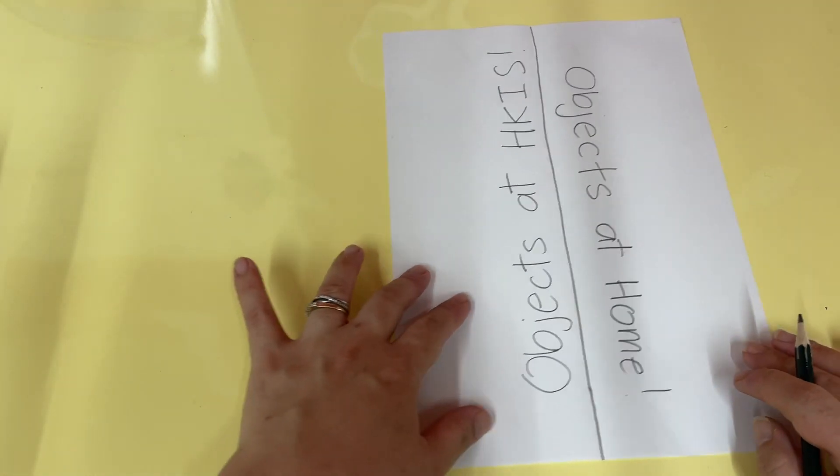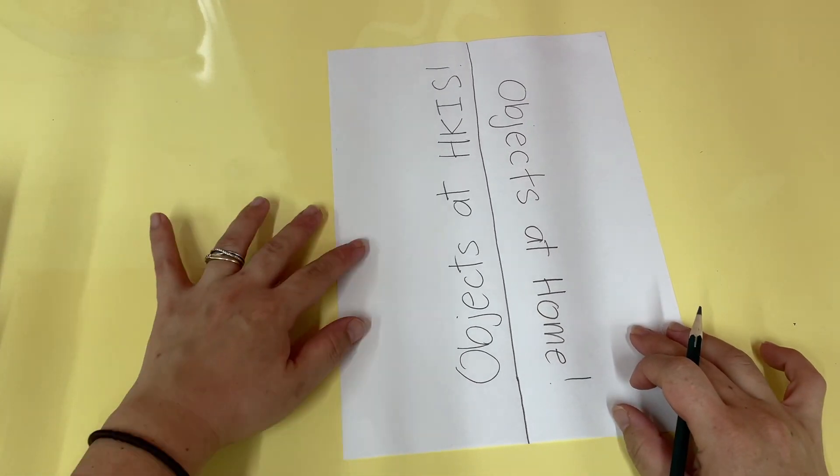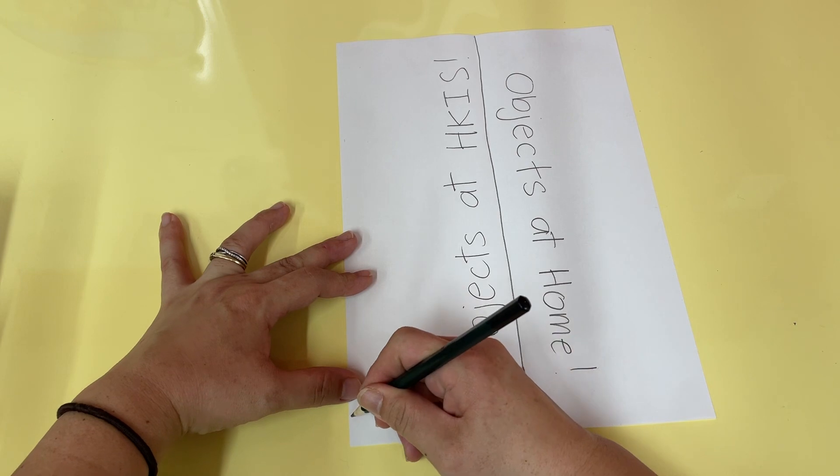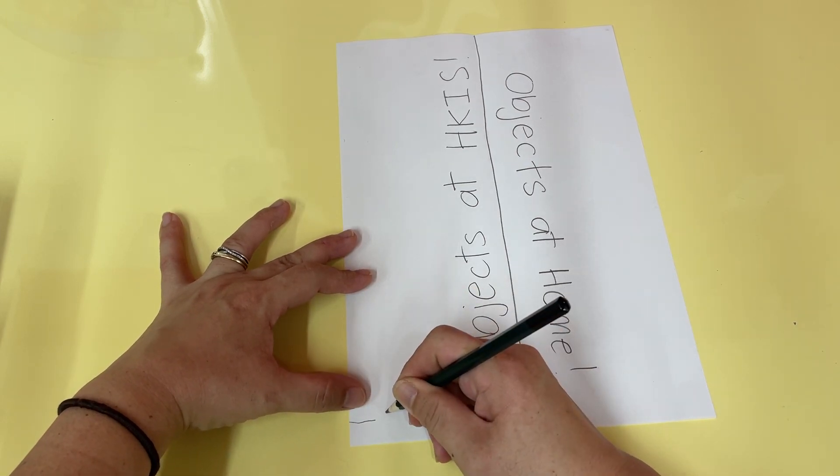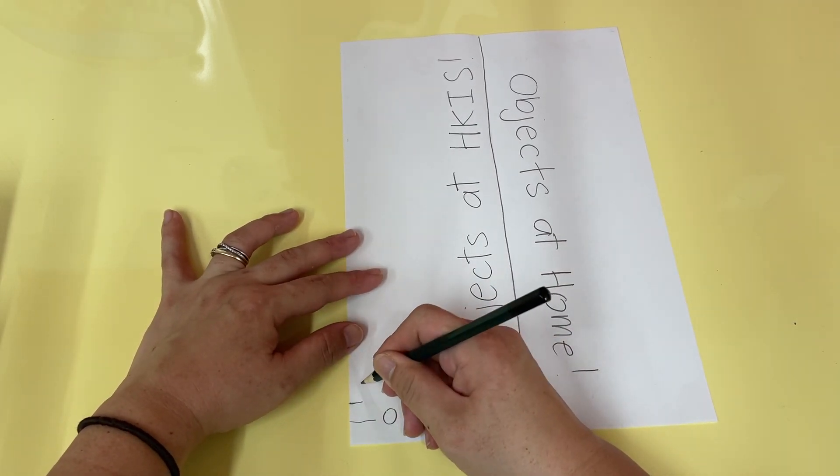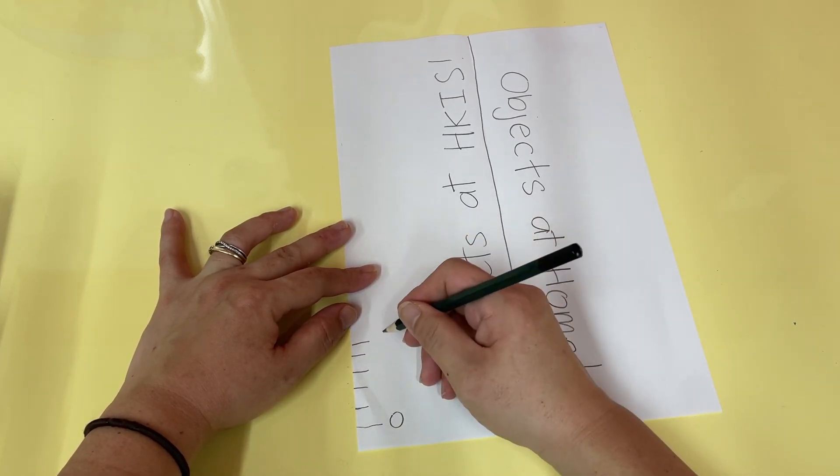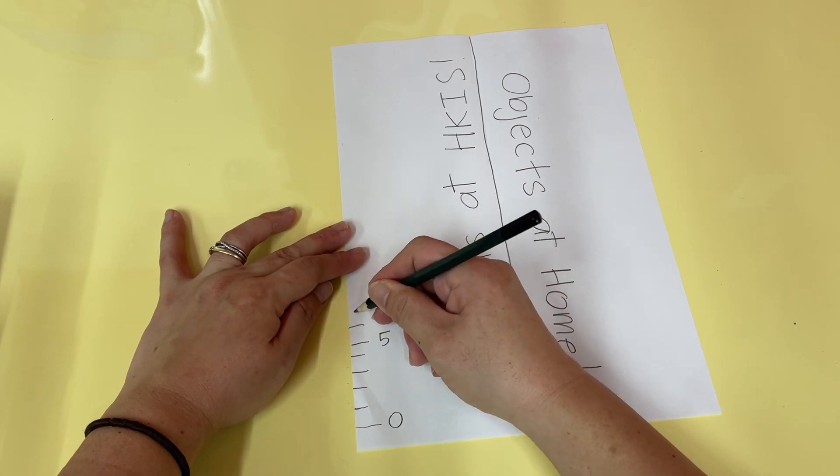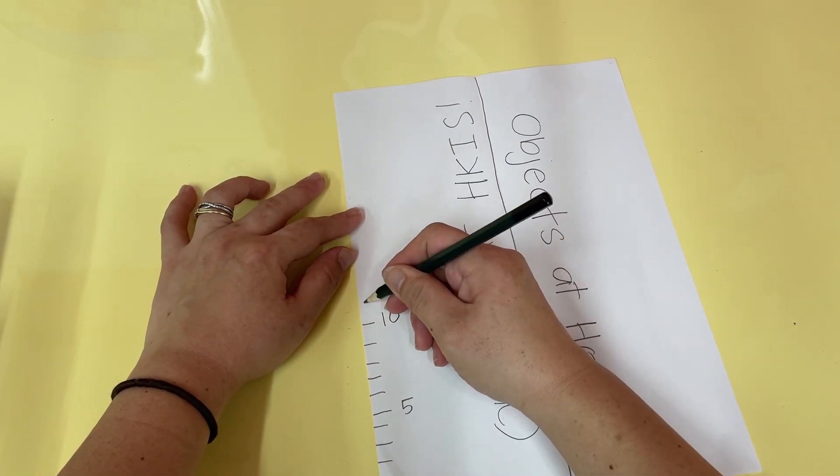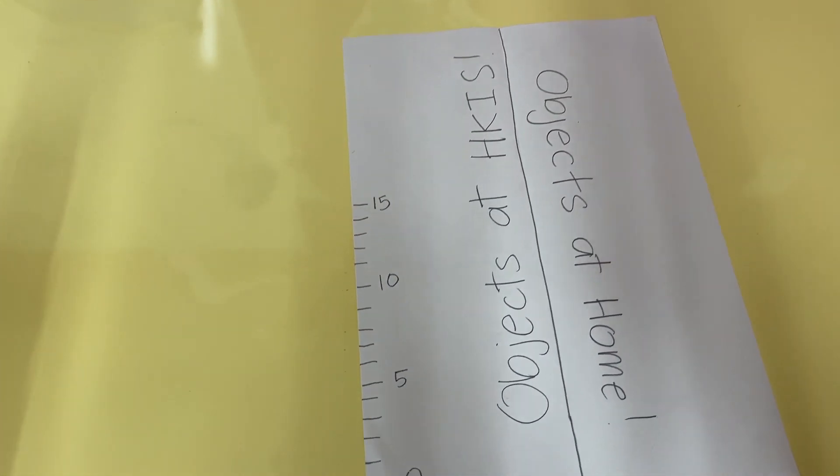And then on one side, I'm going to erase it a little so you can see clear. So here you can draw a ruler. It's like a ruler. So here we start with zero. And then we go 1, 2, 3, 4, 5, 6, 7, 8, 9, 10, 11, 12, 13, 14, 15. Here you go, see, you can go closer.